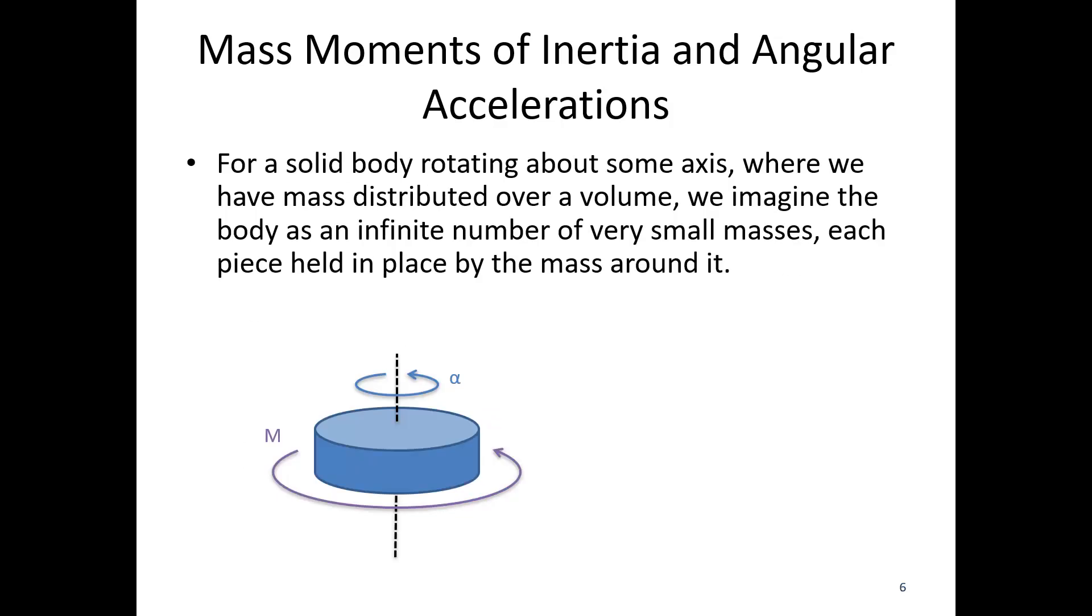And then one step further, for a solid body rotating about some axis, the mass is going to be distributed over a volume. So imagine an infinite number of very small masses, each held in place by the mass around it. So we've gotten rid of that massless stick. Everything is just held in by the stuff around it. But we still always have some distance to that central axis we're rotating about. So in this case, we are taking our equation, our sum, one step further. We are taking the integral. We are integrating all the masses and we are integrating that distance squared term over the entire mass. So this is the second moment integral and it is a mass moment integral.